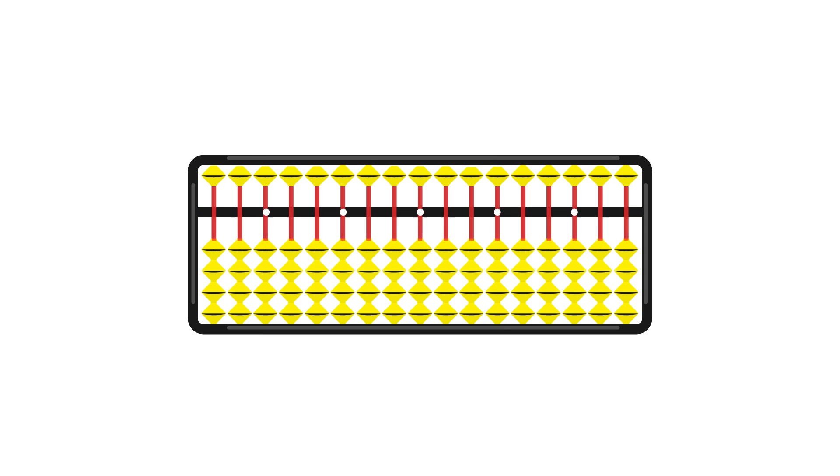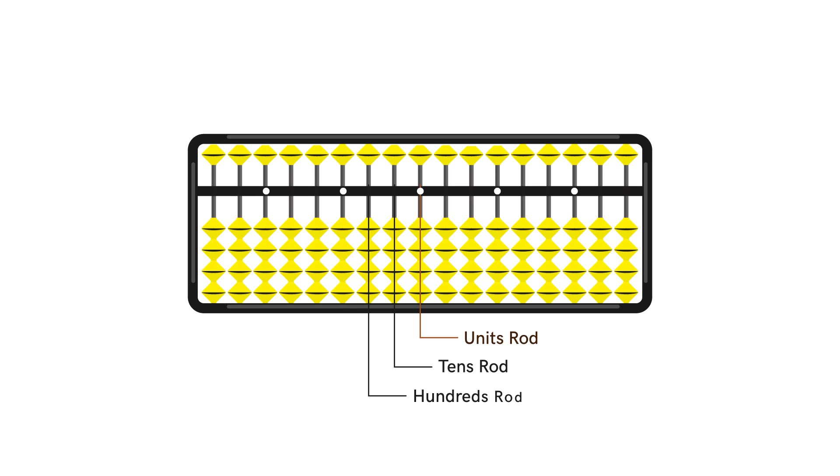The black columns made by the vertical bars here are called rods. Each rod has a different name and represents a different value. This one is the units rod. The one on the left is the tens rod. Then we have the hundreds rod, thousands rod and so on.